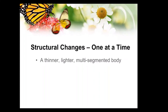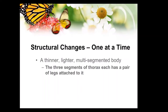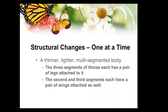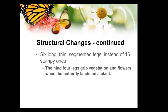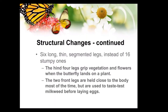Let's look at those structural changes one thing at a time. We have a lighter, thinner, multi-segmented body. The three segments of the thorax each have a pair of legs attached. The second and third also have a pair of wings attached. It now has six long, thin, segmented legs instead of the 16 stumpy ones that a caterpillar had.